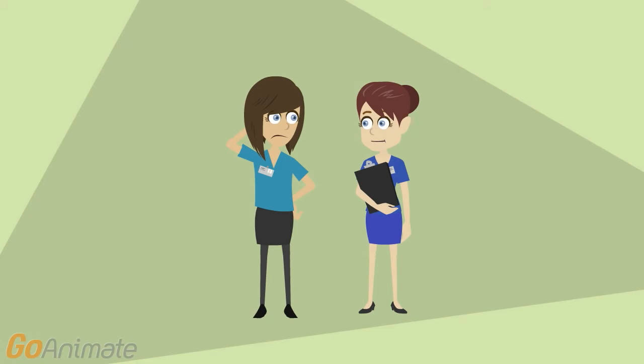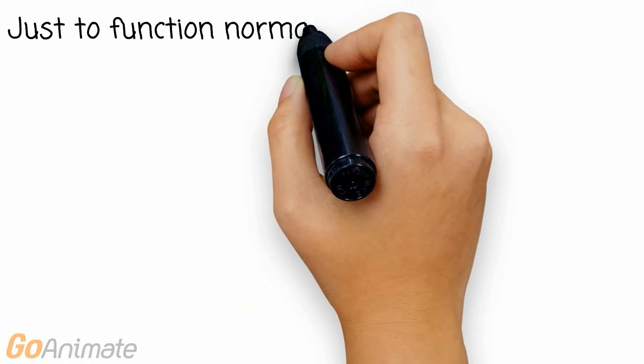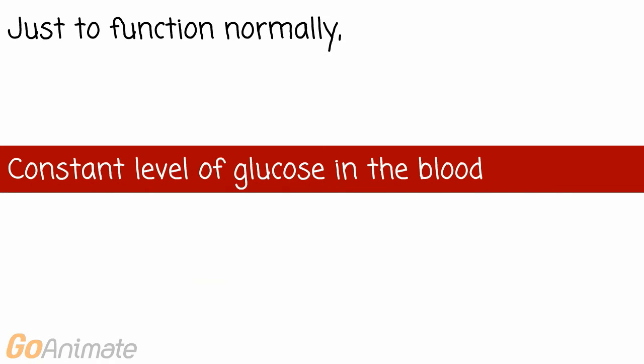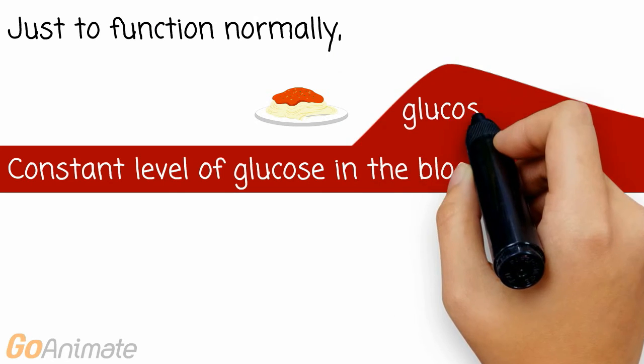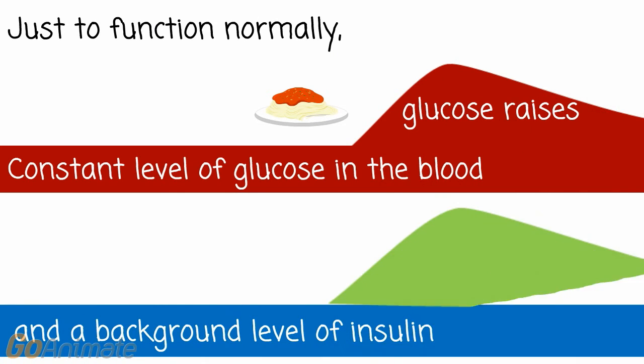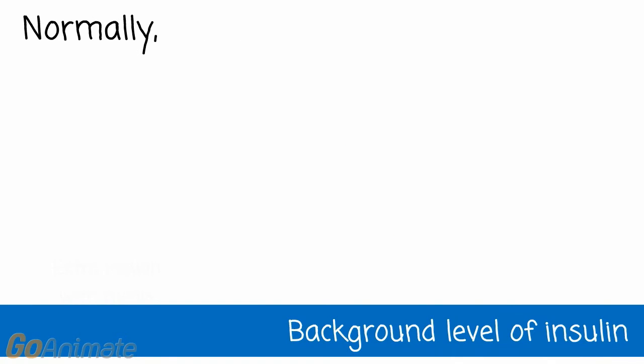Yes, Kate, that is correct. There are indeed different regimens. As you know, Kate, the body needs a constant level of glucose to function normally. However, after a meal, the glucose rises. Likewise, there is a constant release of background insulin and it rises further after a meal to keep the blood glucose levels stable. So normally, insulin requirement varies through the day.